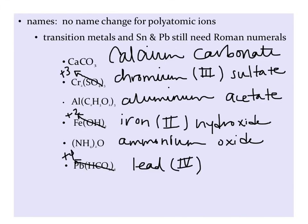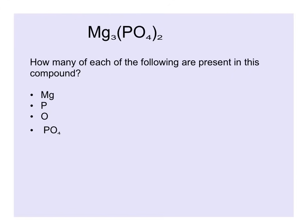The polyatomic ion in parentheses has two names. I usually use bicarbonate. To end with, let's just make sure we understand how to interpret the subscripts when we have a polyatomic ion in our chemical formula. If we look at this chemical formula, we can see that we have three magnesiums and two of these phosphates. But how many phosphorus and oxygen atoms do we have? Think the distributive property like in algebra. We have two phosphorus and eight oxygen.